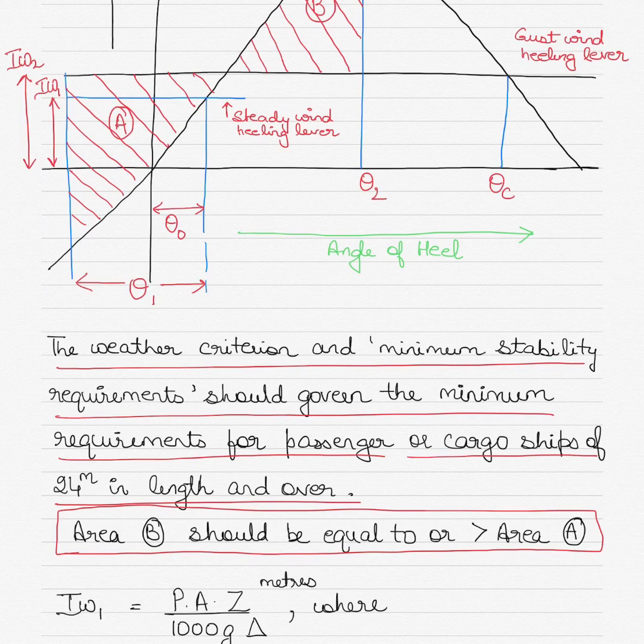Now how is area A and B calculated? As you can see, they have been calculated for the values of the wind healing lever or wind healing moment, that is IW1 or IW2. But how is IW1 or IW2 calculated?